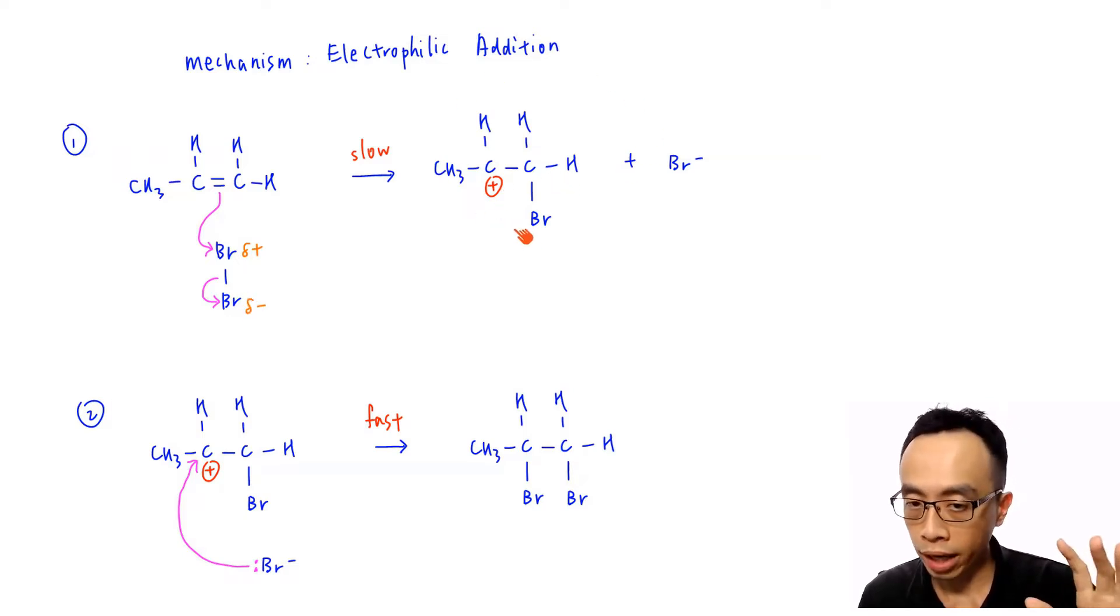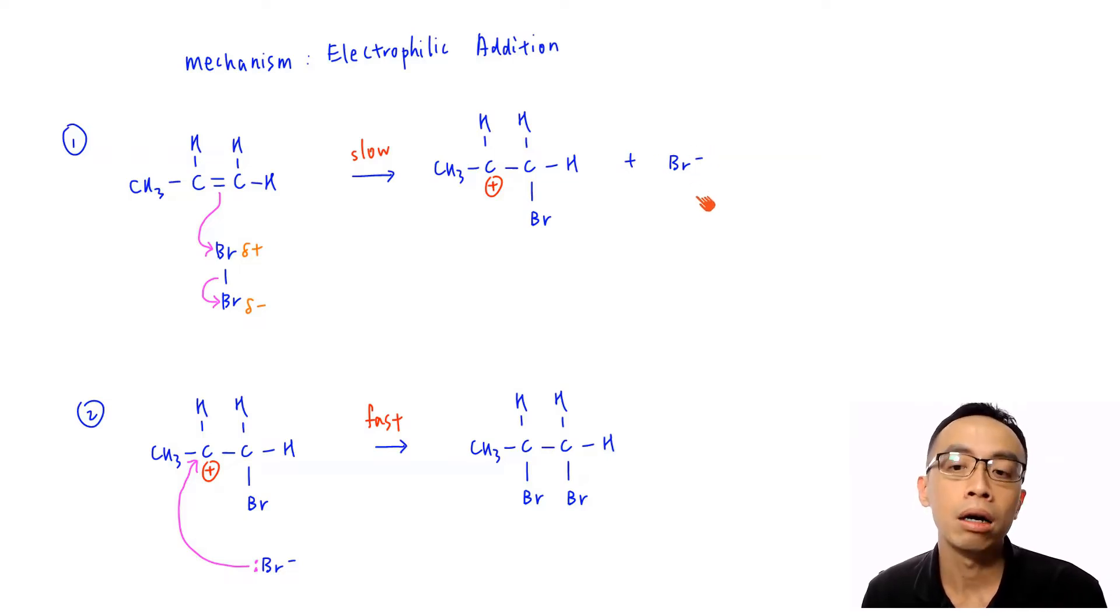I'll be able to form this carbocation. Bromine in this case will join to the carbon on the right-hand side. Positive charge will be on my carbon. The carbocation will be on the carbon at the center. I kick out this Br minus. So I form this carbocation.